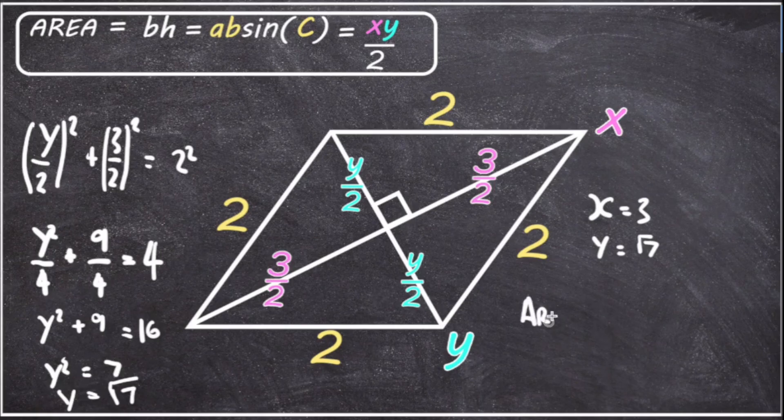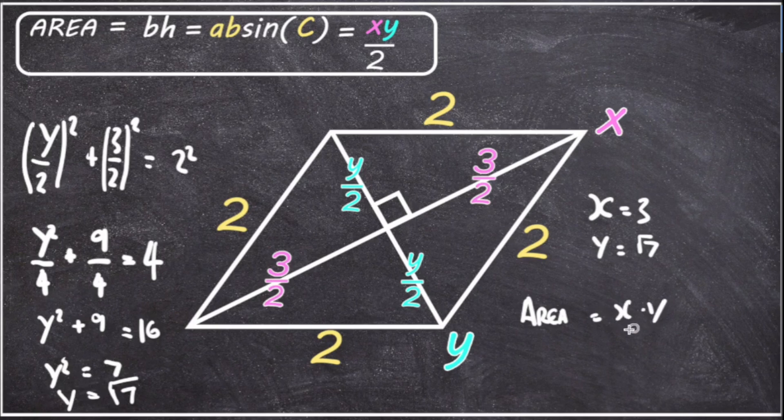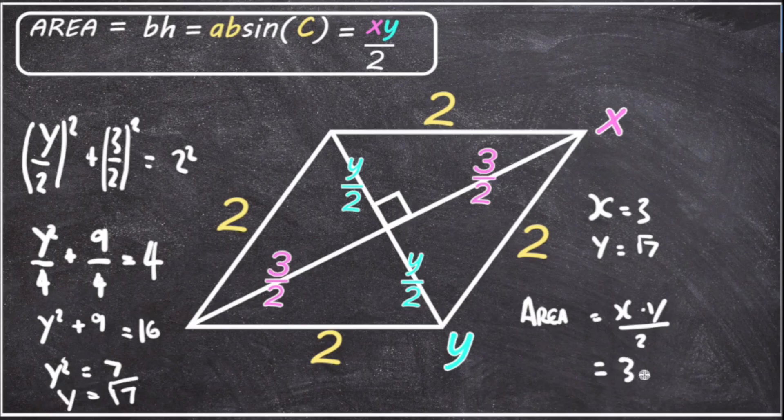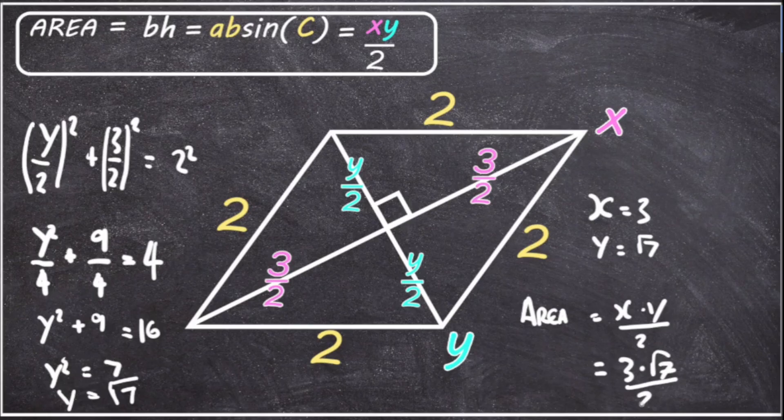So we can use the formula X times Y over two to find the area. So the area is equal to X times Y over two, which is equal to, well, X is three, and Y is root seven over two. So that's the area of the parallelogram.